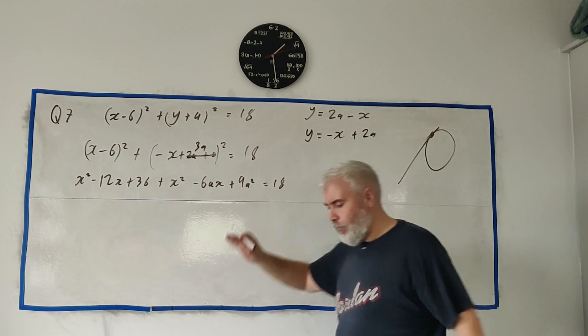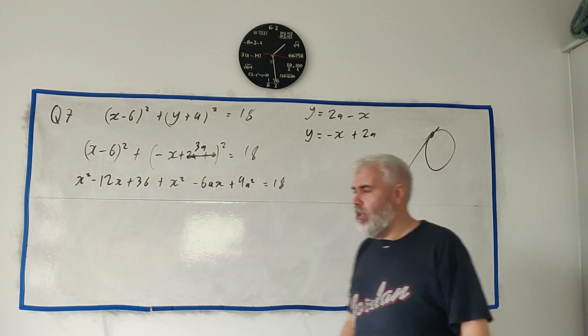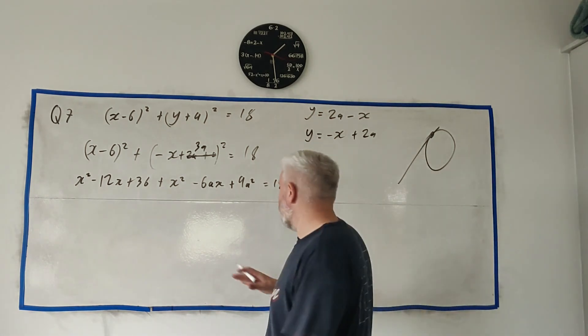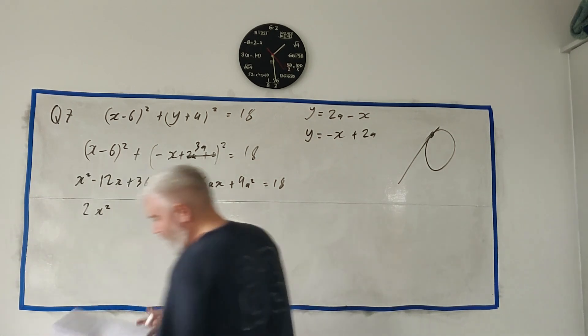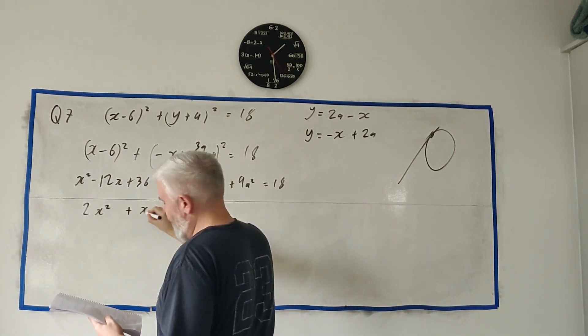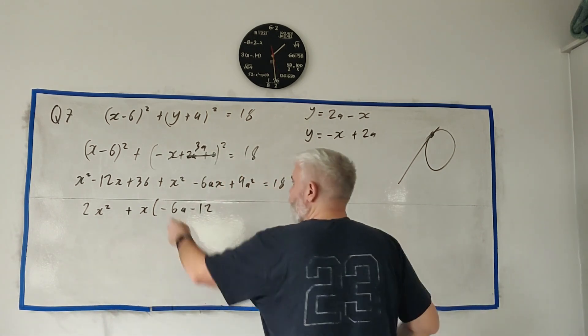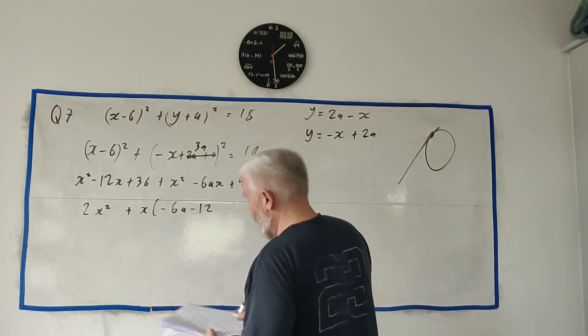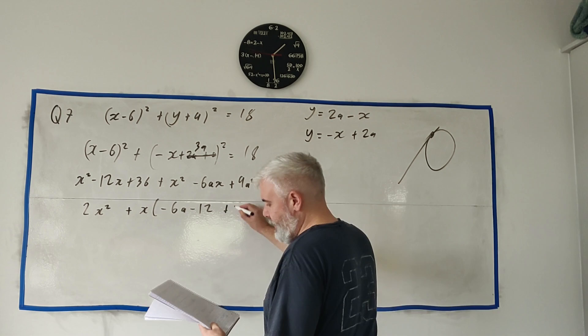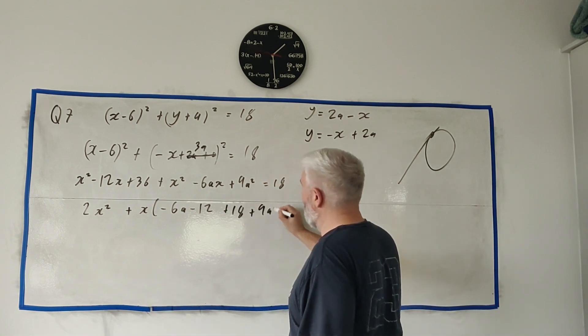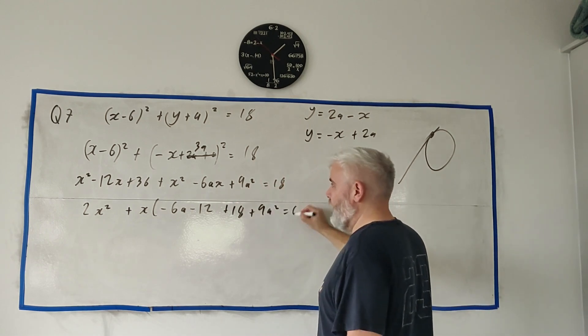Well let me combine this first into a quadratic in x's because we have A's, squares and x squares. Let me get it into a quadratic in x's first. All the x squares together is just 2x squared. All the x's together is minus 6A minus 12. And all the numbers together is 18 plus 9A squared. So that's this 36 minus this 18 and there's the 9A squared. All that equals zero.